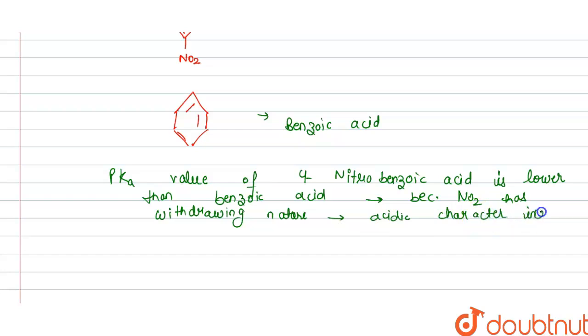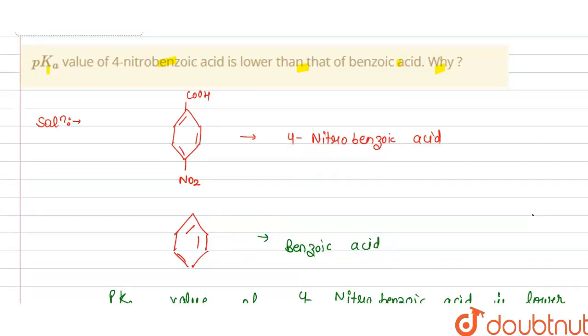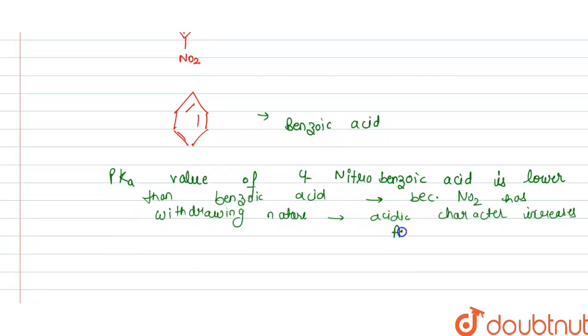So this is the reason behind this. For 4-nitrobenzoic acid, pKa is lower than benzoic acid. So this is the answer. Thank you.